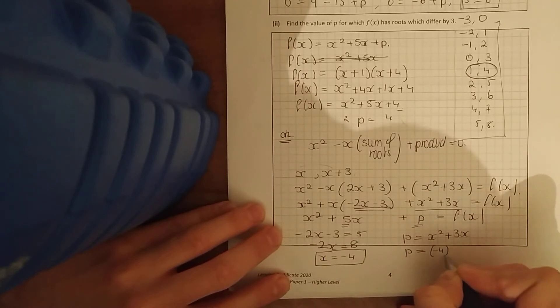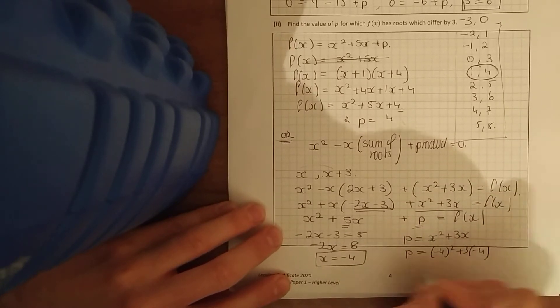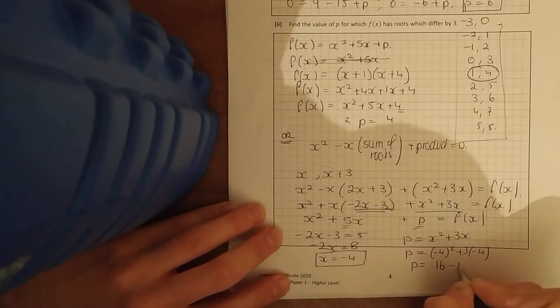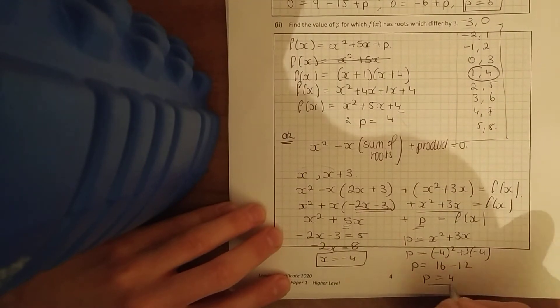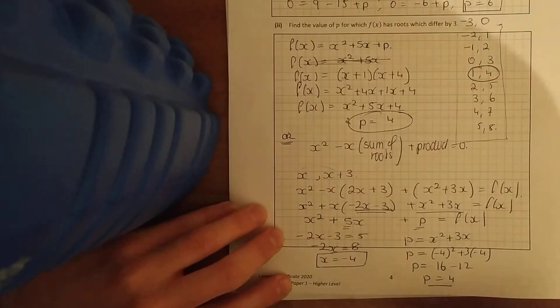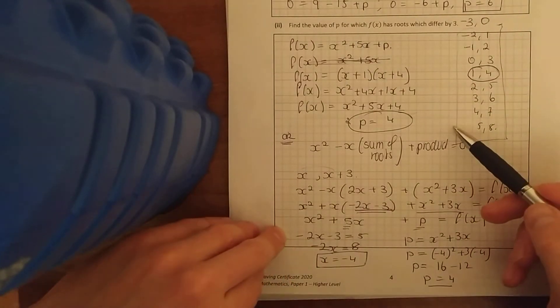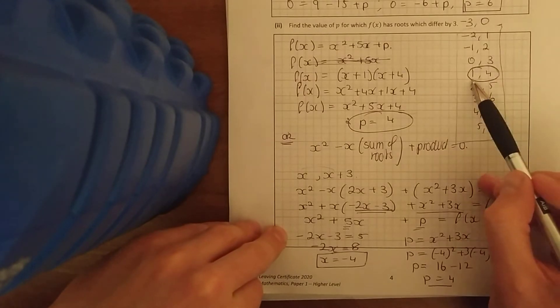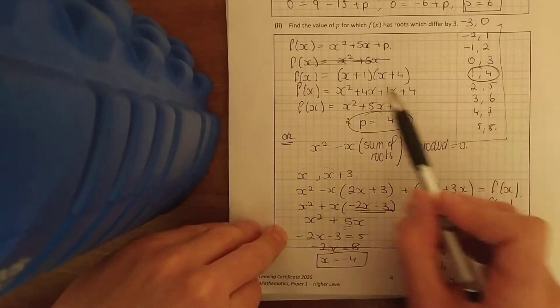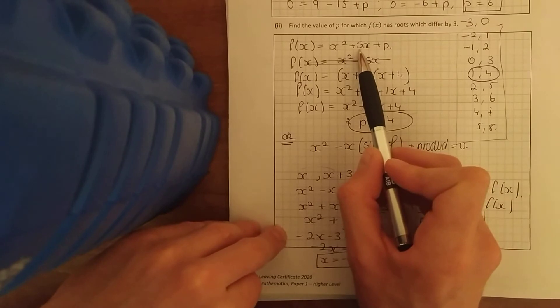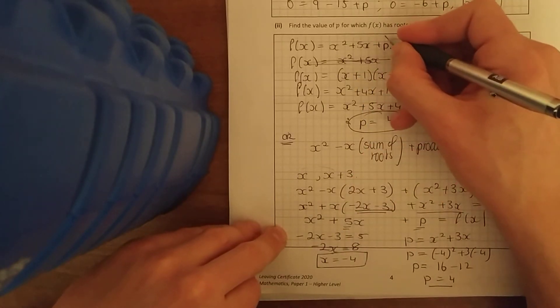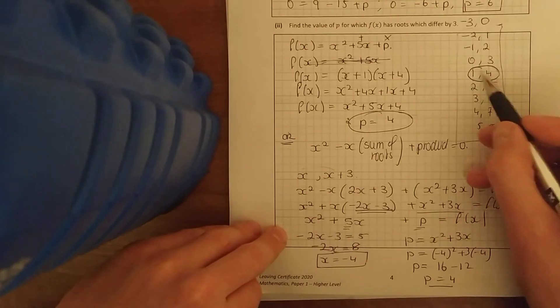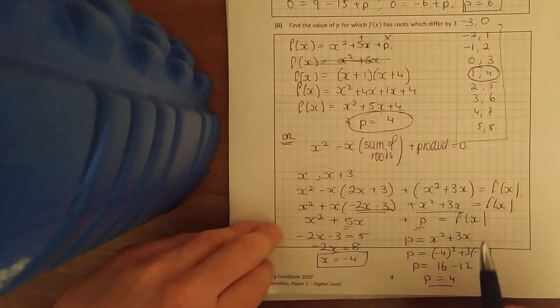p equals x squared, minus 4 squared plus 3 times minus 4. p equals 16 minus 12, p equals 4. Yeah, the same as what we got in both. That may be more foolproof, that was a wee bit watery. So going through your roots, ones that differed by 3, 1 and 4, and also using the fact that we know how to solve the quadratic: multiply to give me this and add to give me this, and 4 and 1 worked out nicely.